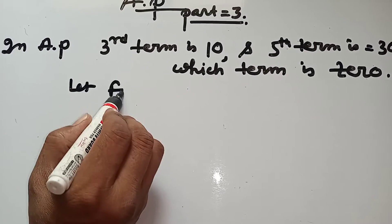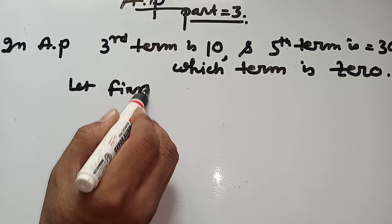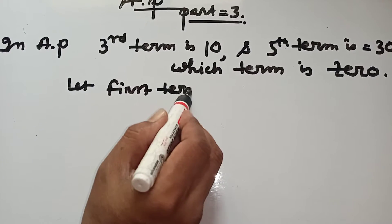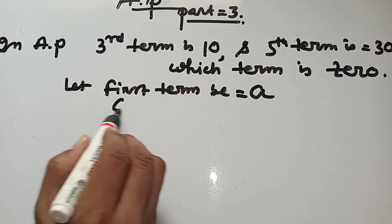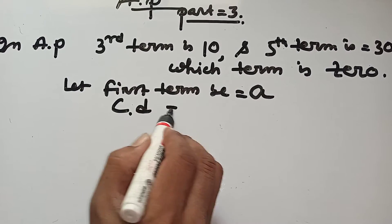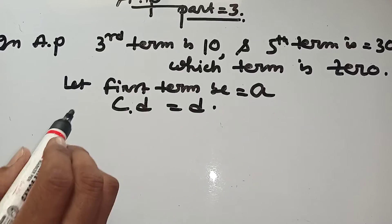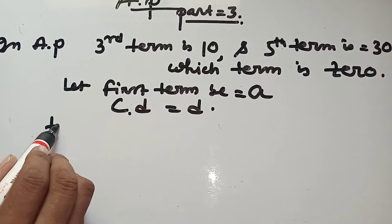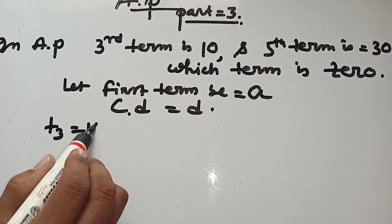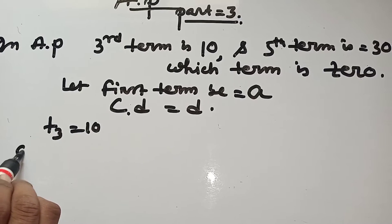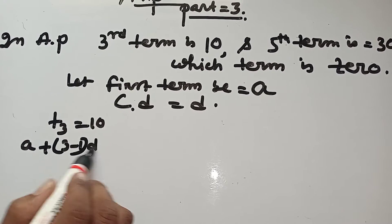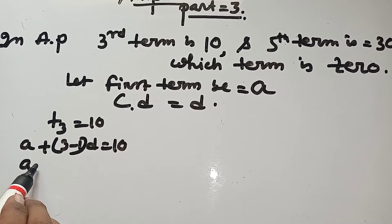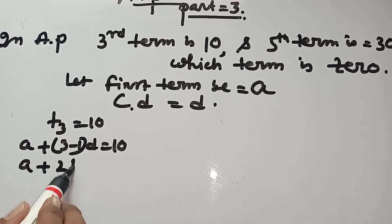Let first term be A, common difference equal to D. Here is given third term, that means T3 equal to 10. That means you can write it A plus 3 minus 1 into D equal to 10, A plus 2D equal to 10.